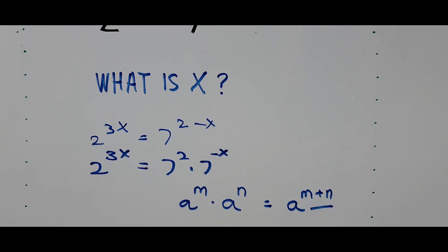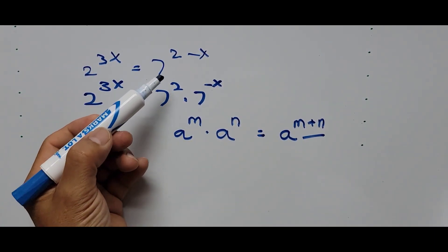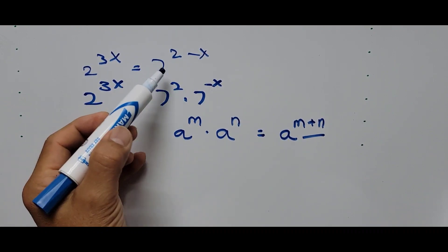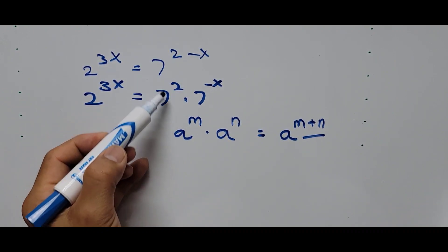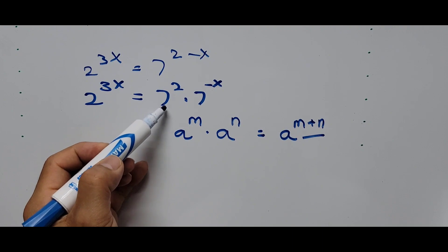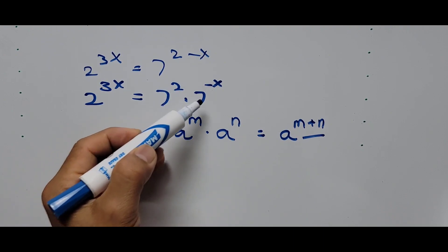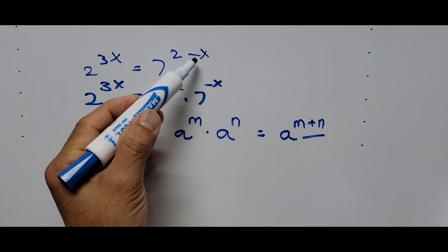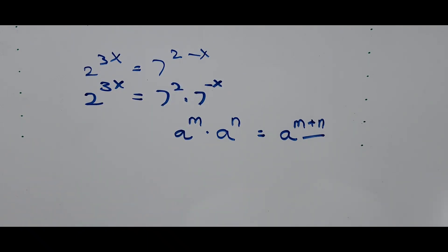That's what happened here. I split the exponent with the same base 7, so we get 7 squared multiplied by 7 raised to negative x — that's the second part of the exponent.